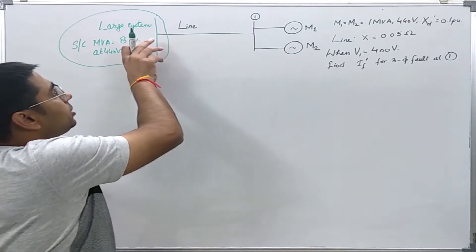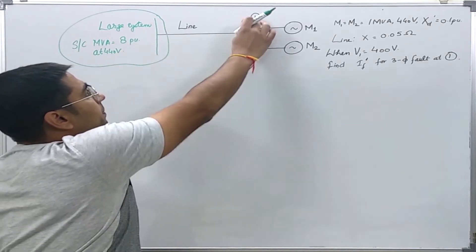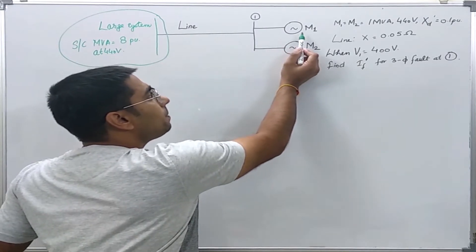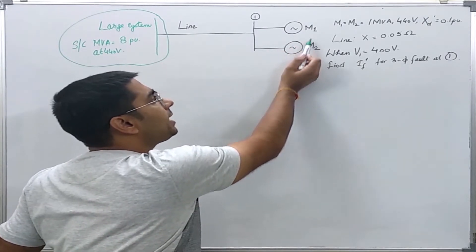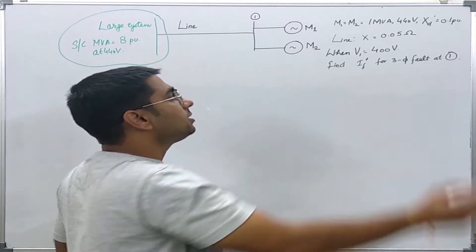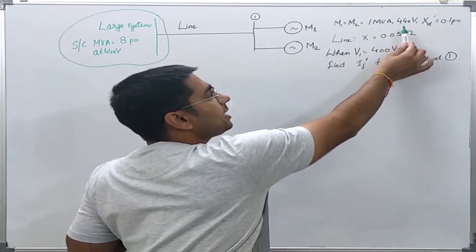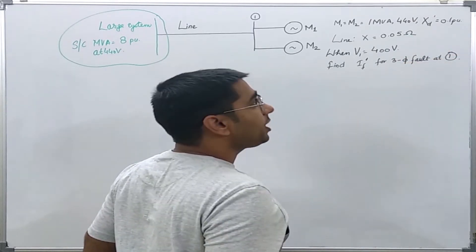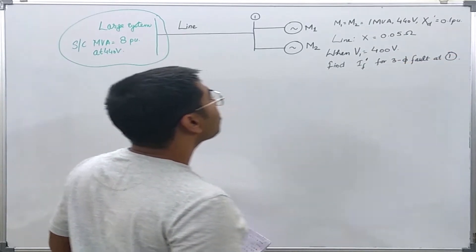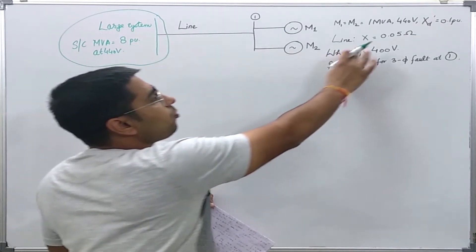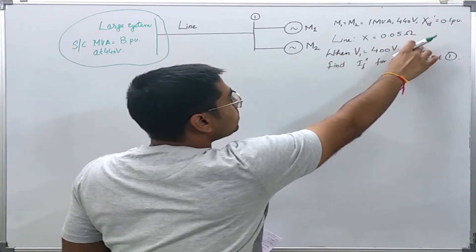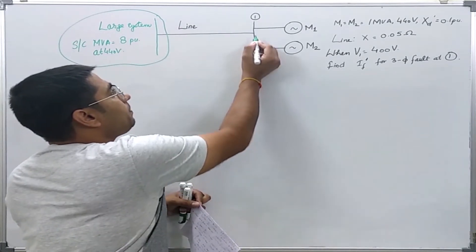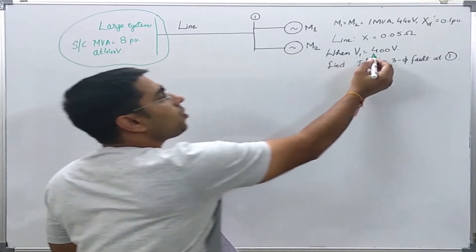This power system is connected through a line to a bus numbered 1. This bus is supplying power to two motors M1 and M2, each rated 1 MVA at 440 volts, with a transient reactance of 0.1 per unit each. The line has a reactance of 0.05 ohms.